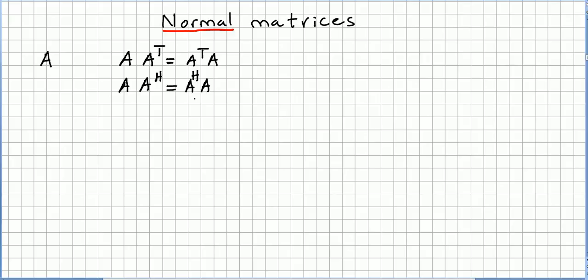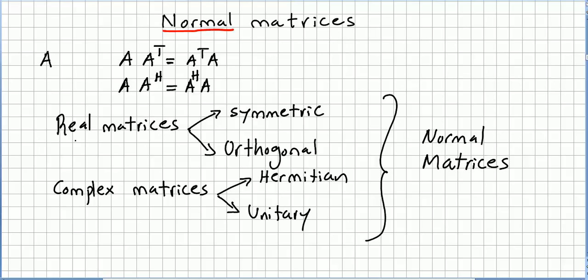In the case of real matrices, symmetric or orthogonal matrices, and complex matrices that are Hermitian or unitary — all these cases are special cases of normal matrices.